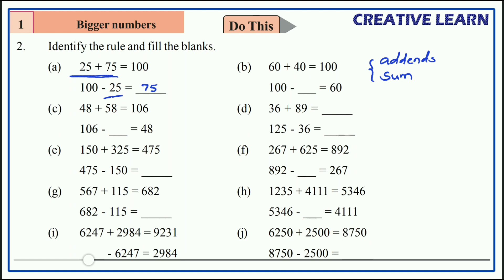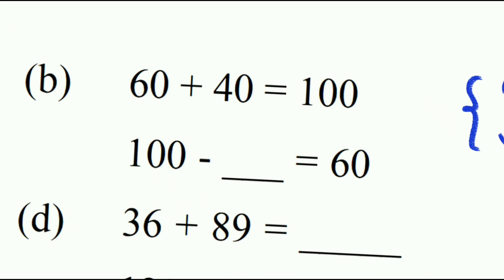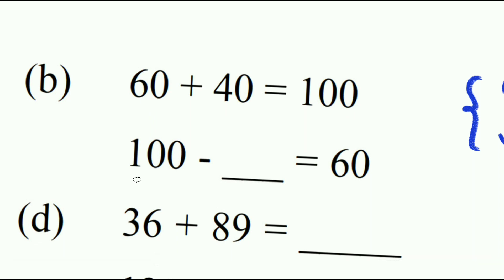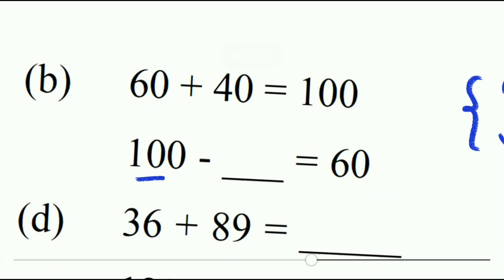Second one: the addends are 60 and 40. 60 plus 40 equals 100. When we subtract a number from 100 and the answer is 60, the missing addend is 40.